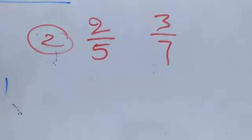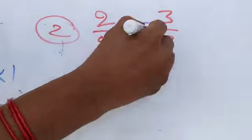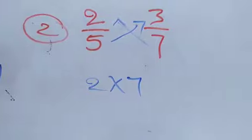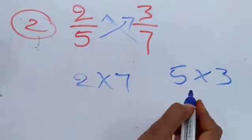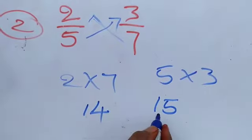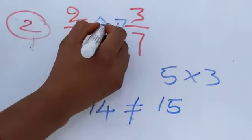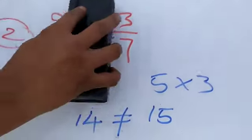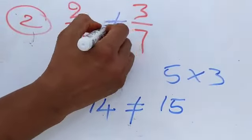Now 2 by 5 and 3 by 7 — are these two equivalent fractions? We do cross multiplication: 2 into 7 is 14, and 5 into 3 is 15. Is 14 equal to 15? No, 14 is not equal to 15. So these two fractions are not equal — not equivalent fractions.